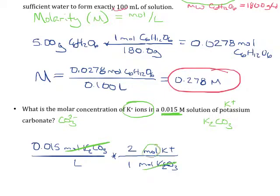Notice that the only units that are going to cancel here are these moles. We are still left in units of moles per liter, so we're still going to end in a molarity and it's going to be twice the molarity. So 0.030 molar K+.